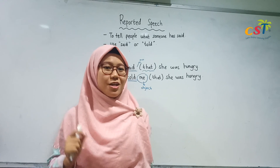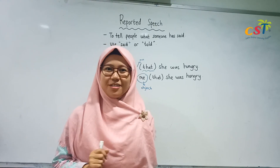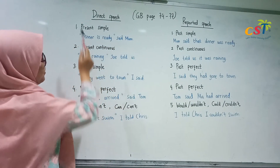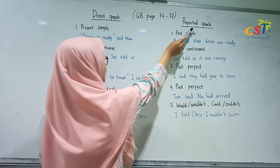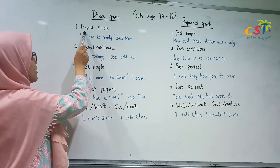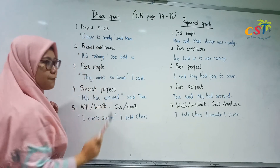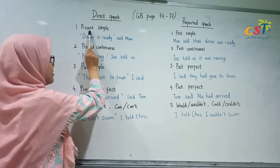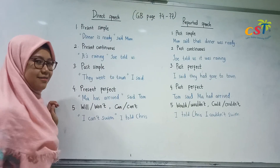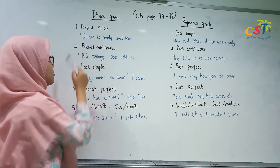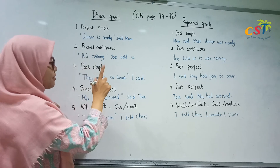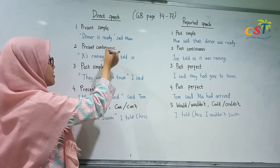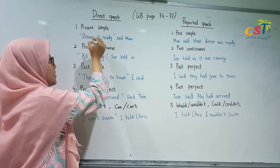Now we will learn how to change direct speech into reporting speech. Take a look at the whiteboard. I've written the list of direct speech and reporting speech. First, if the direct speech is in the present simple form, you change it into past simple. For example: 'Dinner is ready.' We can know that this sentence is present simple from the verb 'is.'